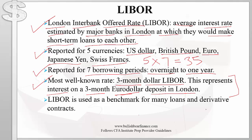LIBOR is important because it is used as a benchmark for many loans. For floating rate loans, you could have a loan quoted as LIBOR plus 1%. Further, LIBOR is also used in the context of many derivative contracts. For example, in an interest rate swap, one party makes fixed interest rate payments — say 6% per year — and the counterparty makes floating rate payments of LIBOR plus 1%. Therefore, LIBOR is a very important interest rate.